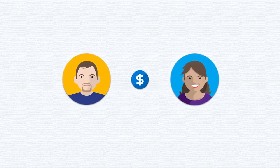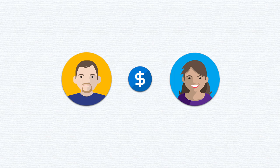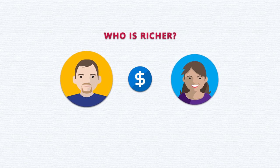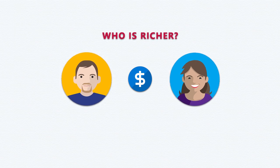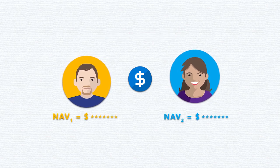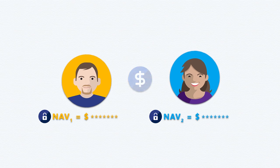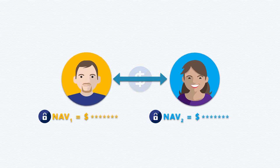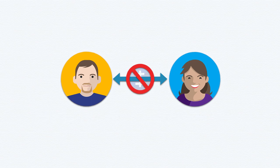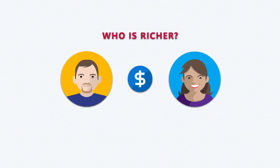Suppose you and I are millionaires and we'd like to find out who amongst the two of us is the richer person. Naturally we're talking about sensitive information, and I don't want to share my net asset value with you, and neither do you want to share that information with me. But we'd just like to compute who is the richer person.